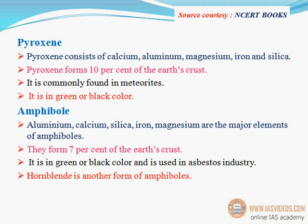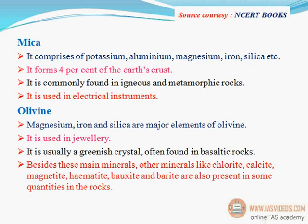Pyroxene consists of calcium, aluminum, magnesium, iron, and silica. Pyroxene forms 10% of the earth's crust and is commonly found in meteorites. It is green or black in color. Amphibole — aluminum, calcium, silica, iron, and magnesium are the major elements of amphiboles. They form 7% of the earth's crust, are green or black in color, and are used in the asbestos industry. Hornblende is another form of amphiboles.